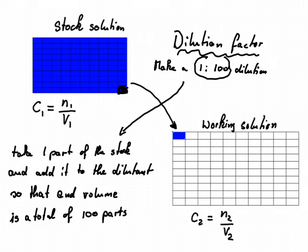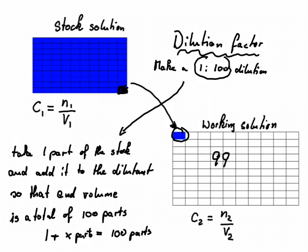There is a little bit of semantics here. What it basically says is: take one part and add it to x parts, so that at the end 1 plus x equals 100 parts. This is easy because we know that to achieve that we would need 99 parts of the diluant. So a 1-in-100 dilution means take one part from the stock and add it to 99 parts of the diluant, giving a total volume of 100 parts.